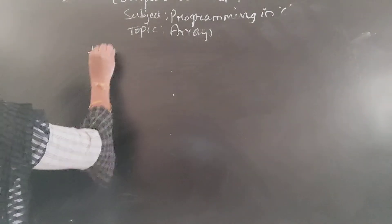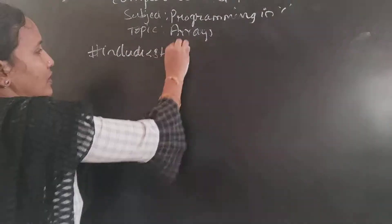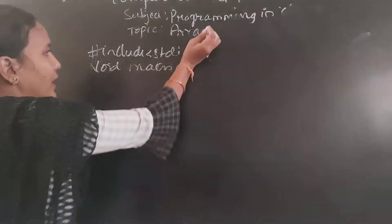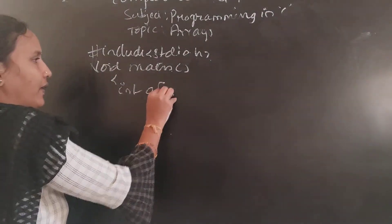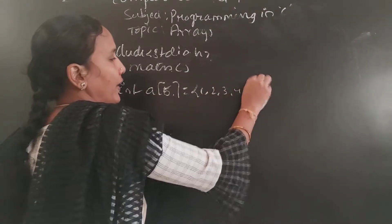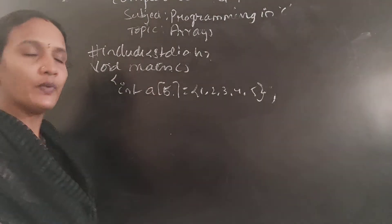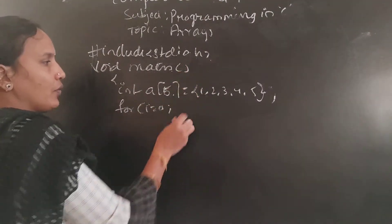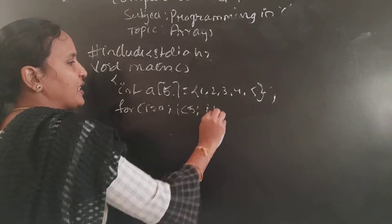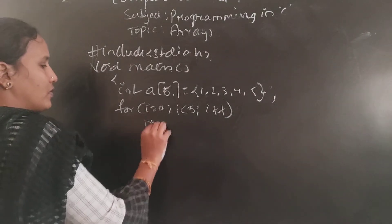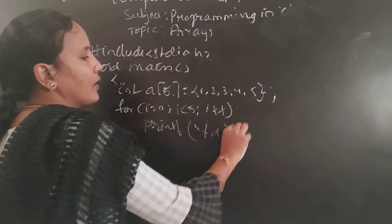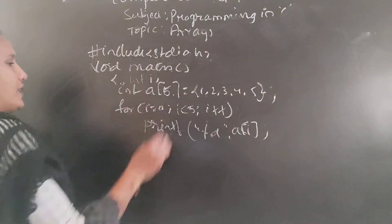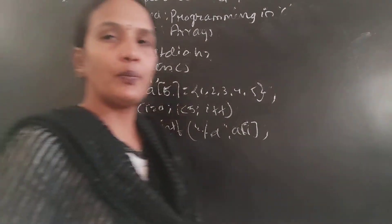In the last example program, I have given a header file, then the main function, and in the program itself I have given the value: int a[5] = {1, 2, 3, 4, 5}. This means at the time of declaration only I am initializing the value. Then to print this, using a for loop you can print: for i equals to 0, i less than 5, i++, printf a of i. This is a simple method to print array elements on the screen.